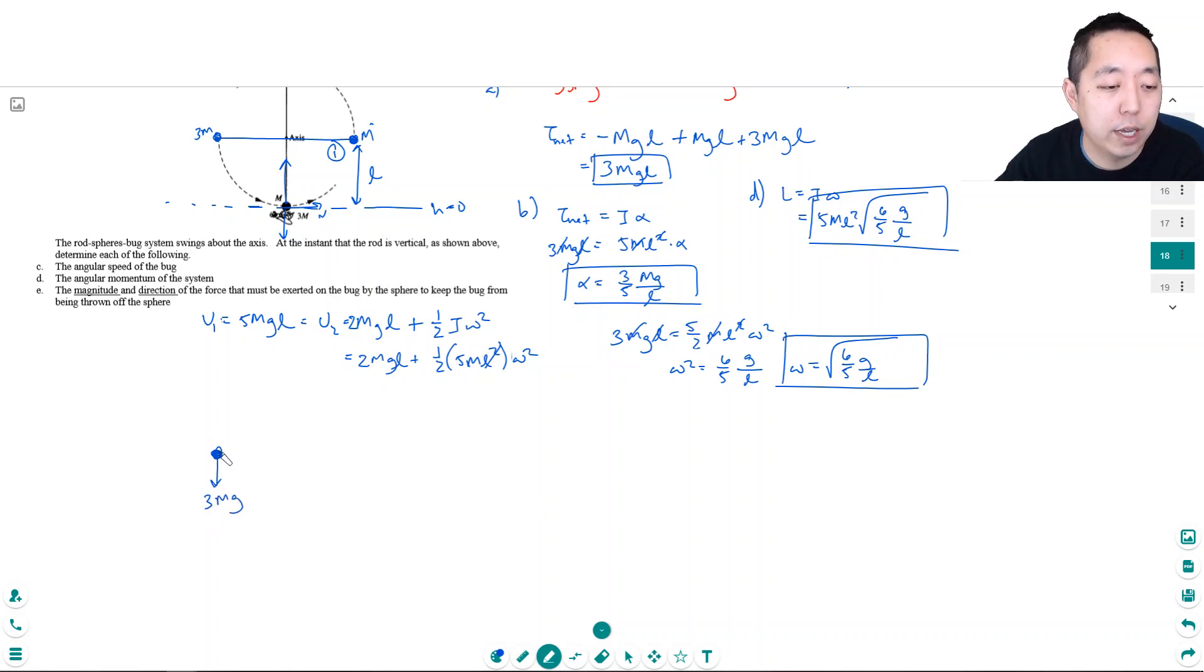Let's draw a free body diagram of the bug. He's got 3mg acting downward because he weighs 3m, and I need some force here. He needs to have a centripetal acceleration towards the center to keep him in a circular path, so it's got to be directed upward.